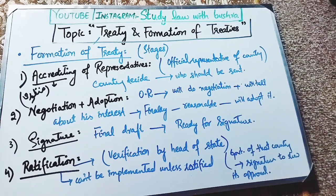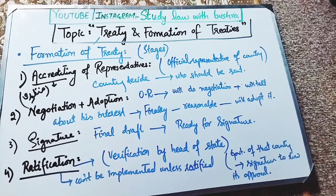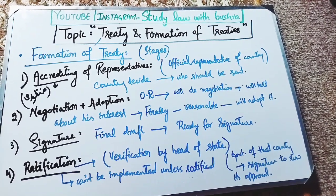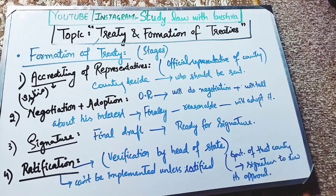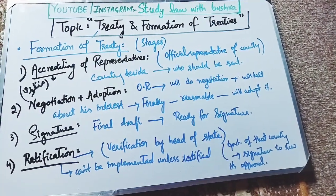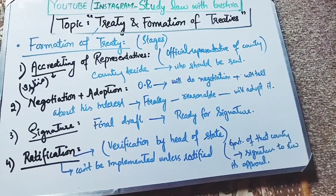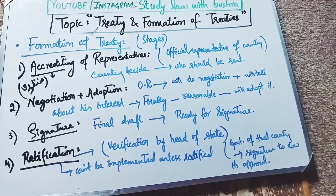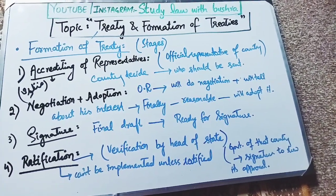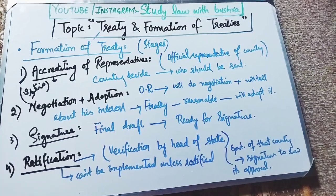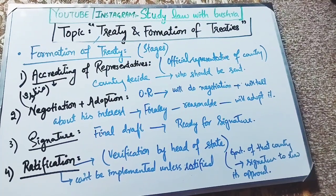The fourth stage is ratification. Ratification means verification by the head of the state — to verify something. In the ratification stage, the treaty cannot be implemented unless and until it is ratified. That means until the treaty is ratified, its implementation will not begin. The head of the state may ratify the treaty contract made by their representative on their behalf.